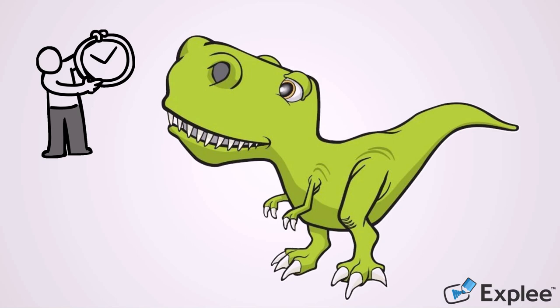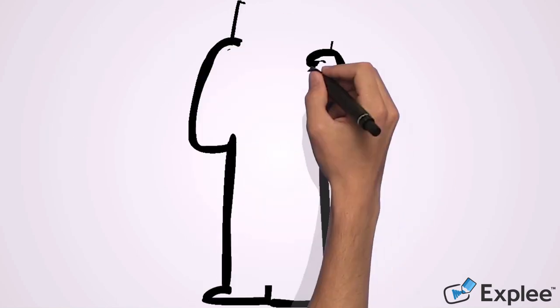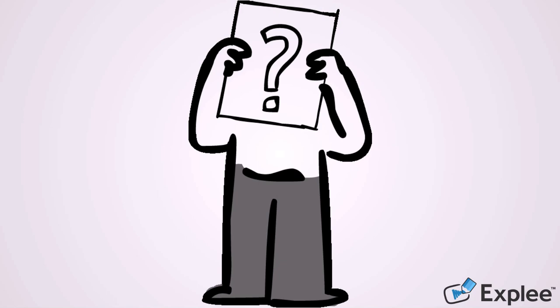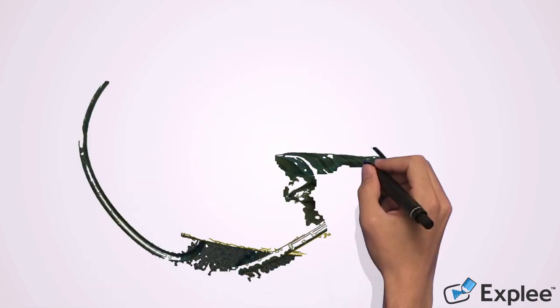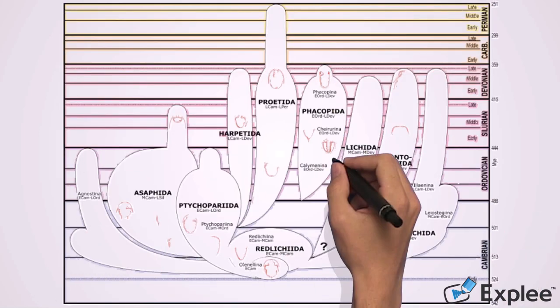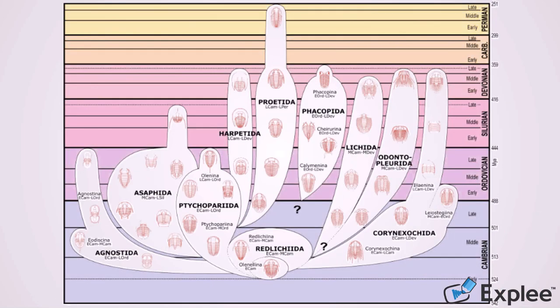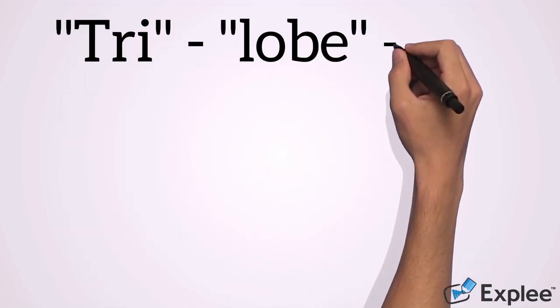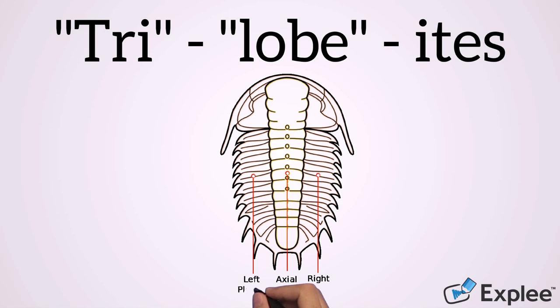So here we have the grand question: what exactly is a trilobite? Well, trilobites are the first known arthropods which managed to conquer the vast marine environment. They are an incredibly diverse class of arthropods characterized by 20,000 known species. The actual name trilobite means 3 lobes, which already paints a clear picture of their typical morphology. The meaning of their name attributes to the exoskeleton's 3 lobes: the axial lobe and the left and right pleural lobes.